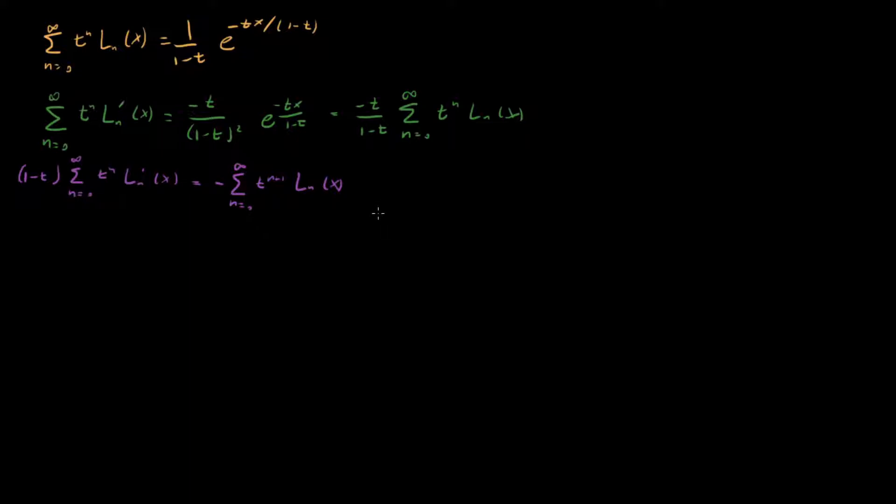So now the only thing left to do is to expand this left-hand side a bit and re-index everything such that we just have t to the n's here. Then we'll essentially have our recurrence relationship. So we can rewrite this left-hand side as sum n equals 0 to infinity t to the n L_n prime of x minus sum n equals 0 to infinity t to the n plus 1 L_n prime of x.